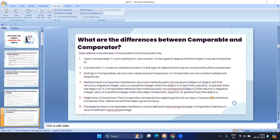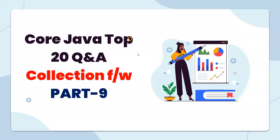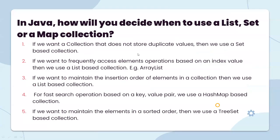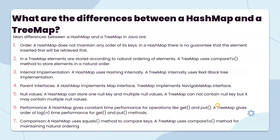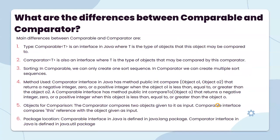Last video, we covered fiction number 4 — what is the difference between Comparable and Comparator. This is the continuation part, as it must be completed in the last session. This is the form. Maybe some network issue happened on my side.